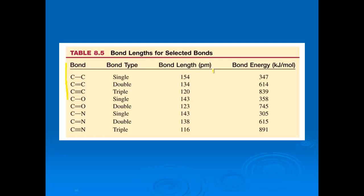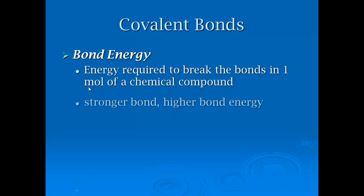Looking at carbon-carbon bonds: a single bond has a bond length of 154 pm and bond energy of 347 kJ/mol. A double bond has a bond length of 134 pm and bond energy of 614 kJ/mol. A triple bond is the shortest at 120 pm and the strongest at 839 kJ/mol — reemphasizing that the shorter the bond, the stronger the bond.